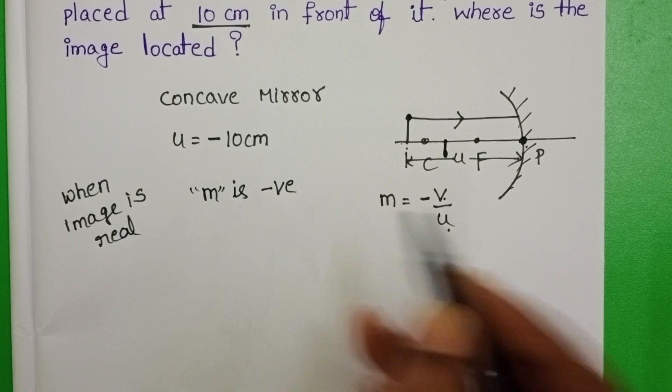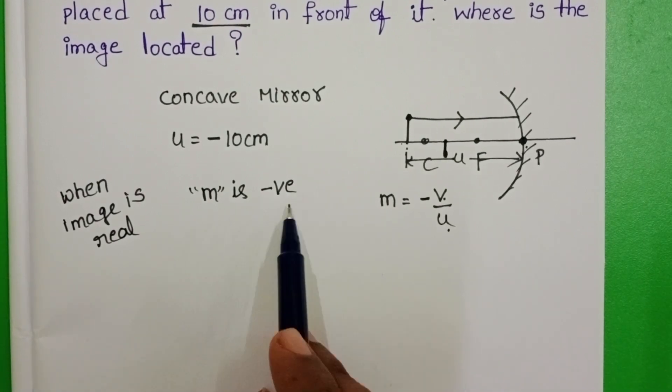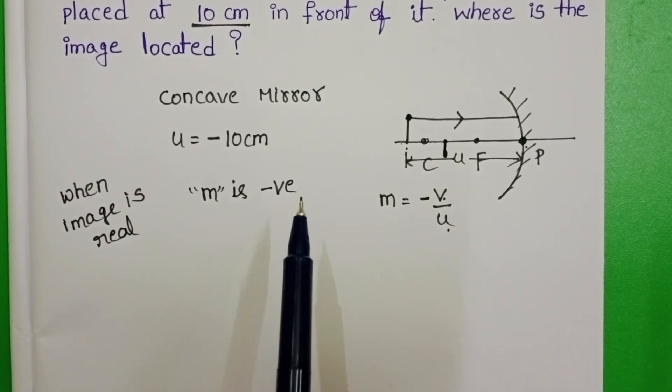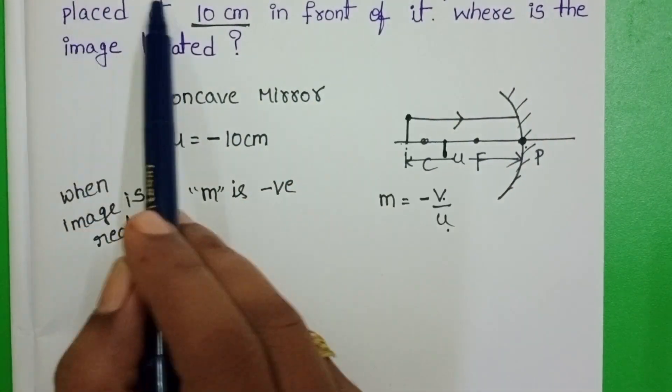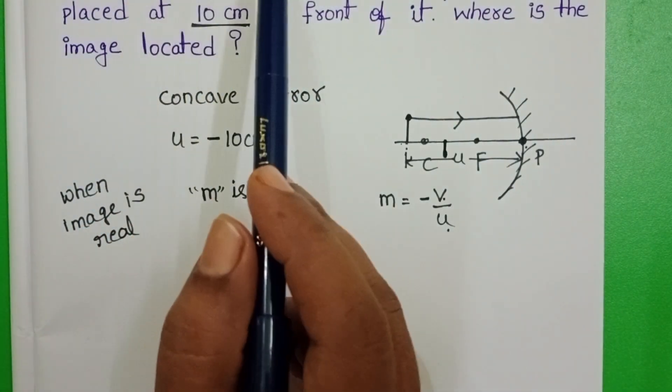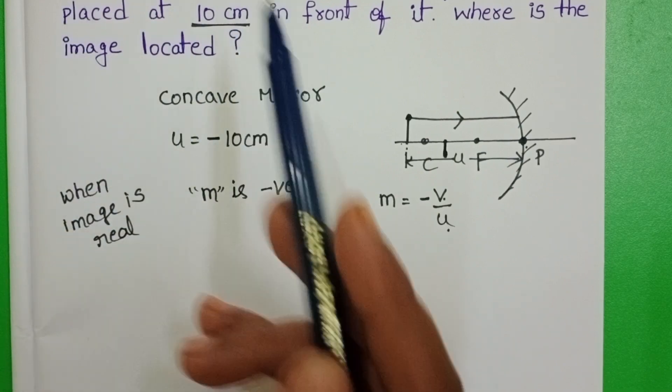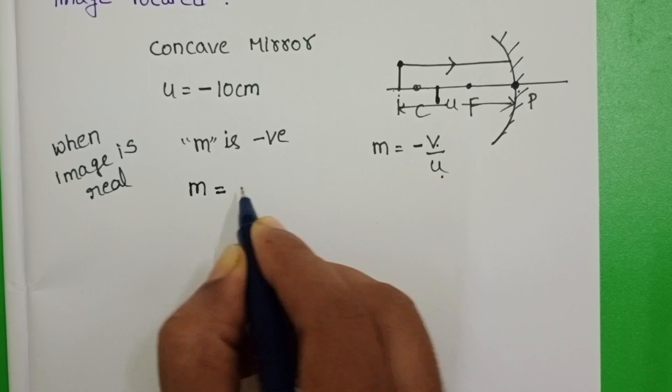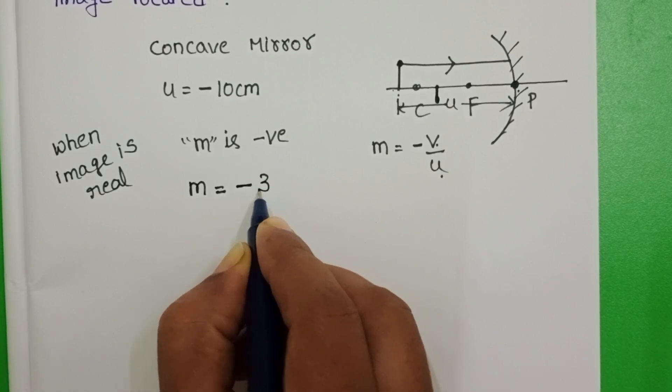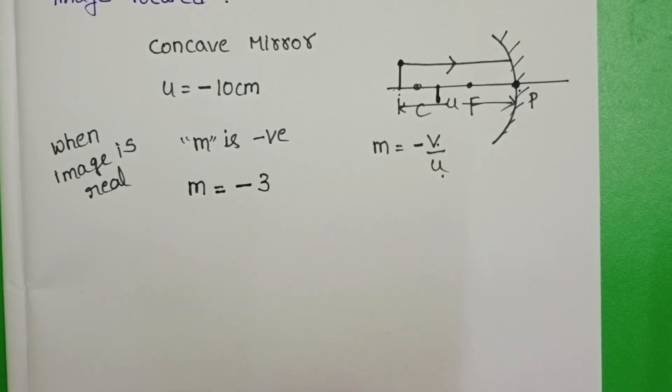When we get the virtual image, then magnification is positive. The given image is real image. So, image size is 3 times to the size of the object. So, take the given value. Magnification is equals to 3, and sign convention is minus. M is equals to minus 3.